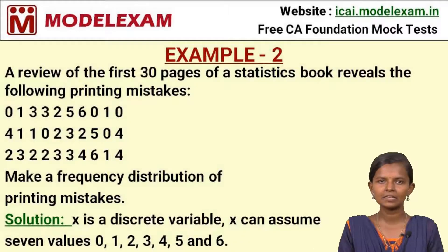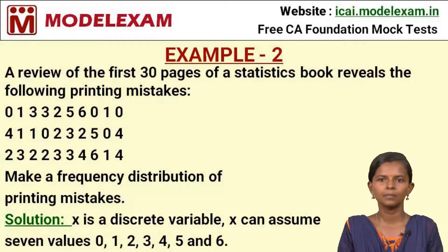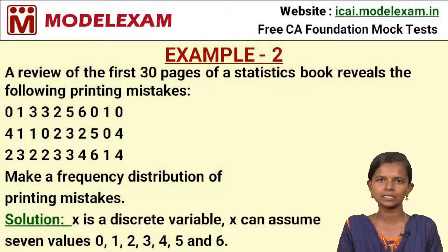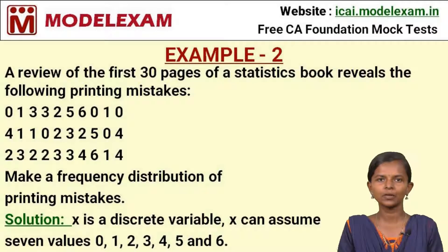Example 2: A review of the first 30 pages of a statistics book reveals printing mistakes. We have to form a frequency distribution table for the printing mistakes. The variable x is discrete, so we construct a discrete distribution table. There are seven values for x: 0, 1, 2 through 6. We will form the table in the next slide.